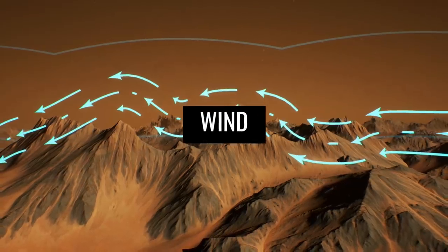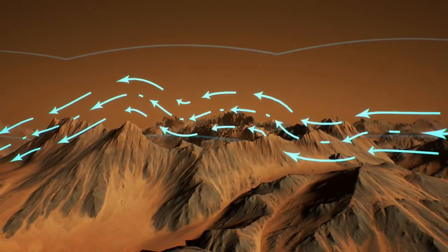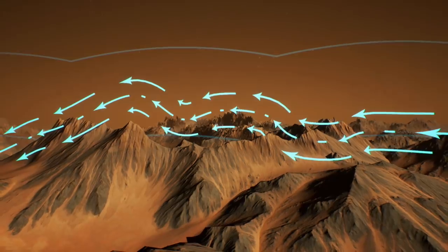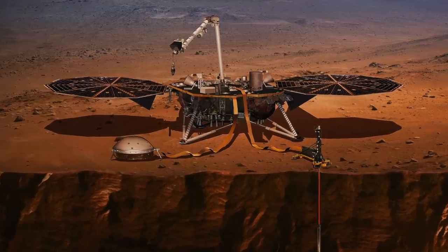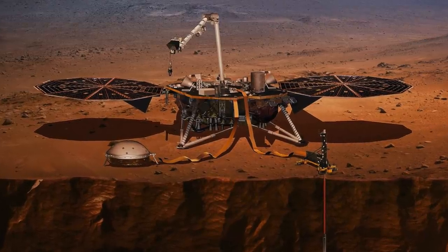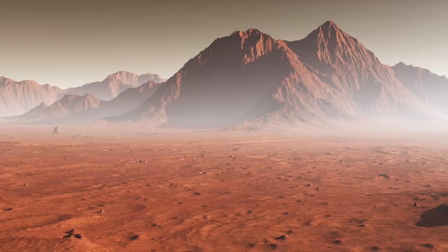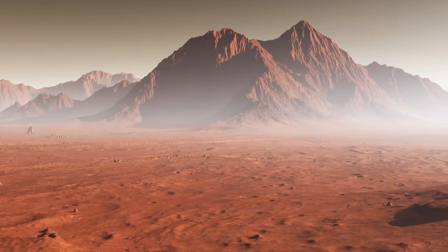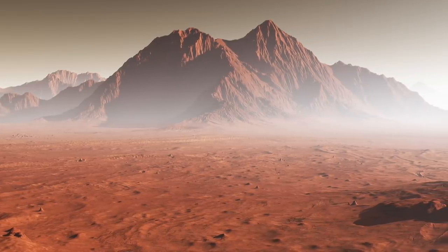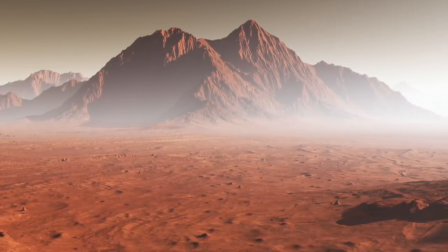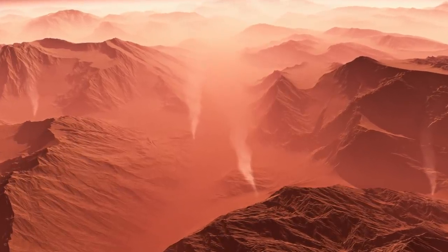InSight measures wind speed, wind direction, and air pressure almost continuously and provides more data than previous landed missions. The spacecraft's fragment sensors have detected thousands of passing whirlwinds, otherwise known as dust storms when they pick up sand and become visible. This site has more whirlwinds than any other place where fracture sensors have been placed on Mars. Whirlwinds and dust storms are perfect for subsurface seismic exploration.